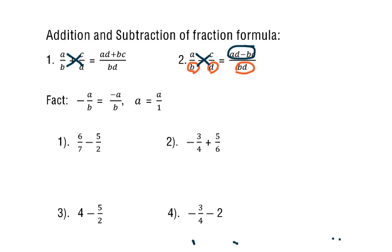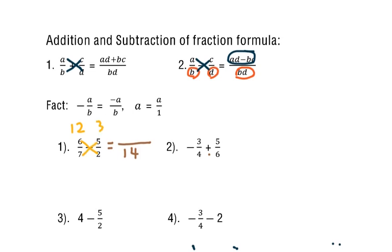Number one: 6 over 7 minus 5 over 2. The denominator is 7 times 2, which gives 14. Cross multiply: 6 times 2 is 12, and 7 times 5 is 35. This is a subtraction, so 12 minus 35 gives negative 23 over 14. That's the answer.